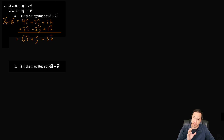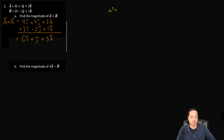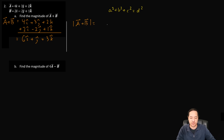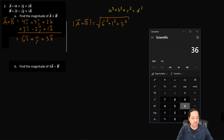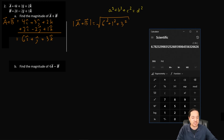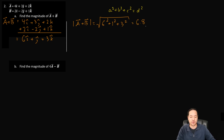Now to find the magnitude, we use the three-dimensional version of the Pythagorean theorem: a squared plus b squared plus c squared equals d squared. So the magnitude of a plus b equals the square root of 6 squared plus 1 squared plus 3 squared, which is the square root of 36 plus 1 plus 9, equaling the square root of 46, giving us approximately 6.8.